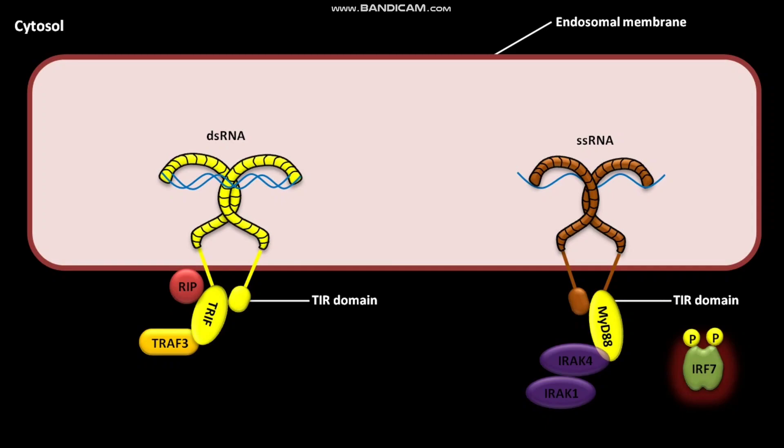IRAK1 phosphorylates itself. TRAF6 then binds to the phosphorylated IRAK1 and activates it.